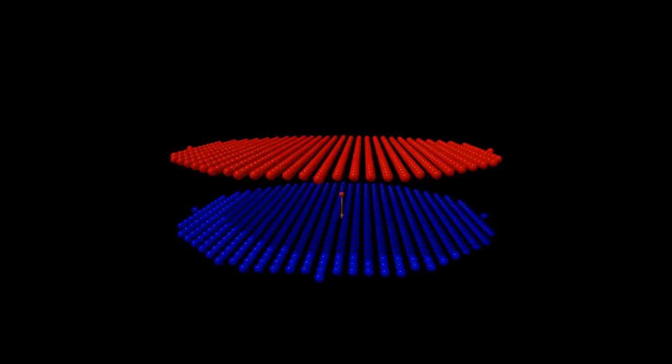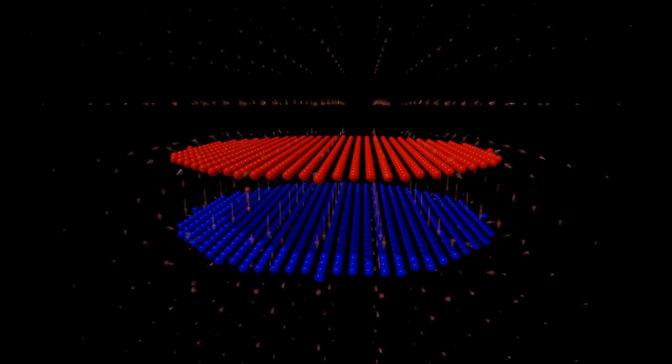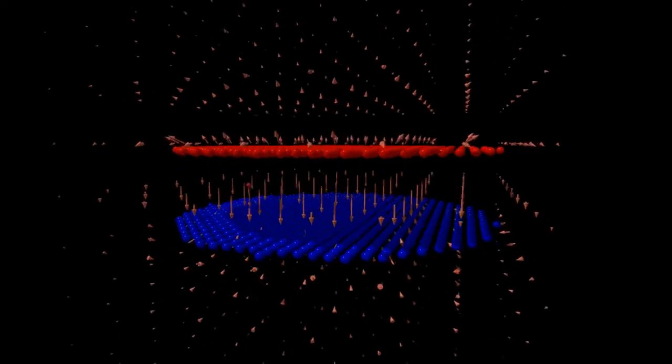A parallel plate capacitor consists of oppositely charged conducting plates, simulated here by two flat arrays of charges, one positive and one negative. The field is strongest between the plates and is very weak outside that region.